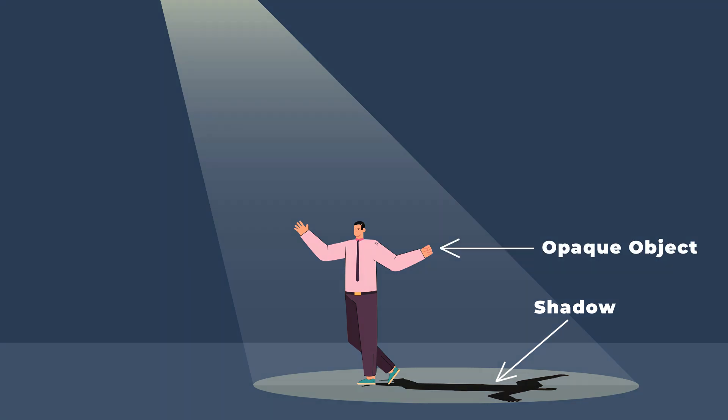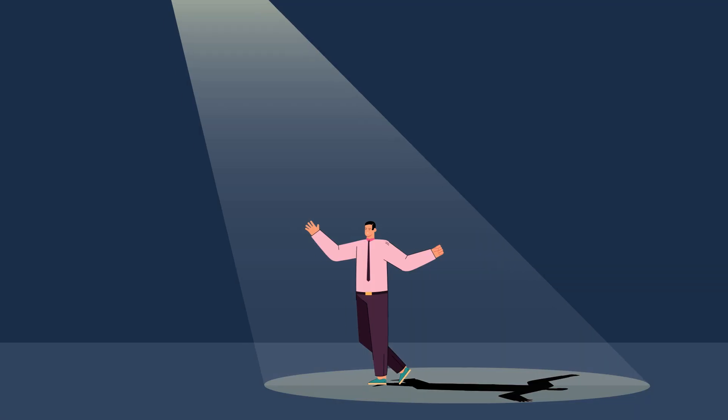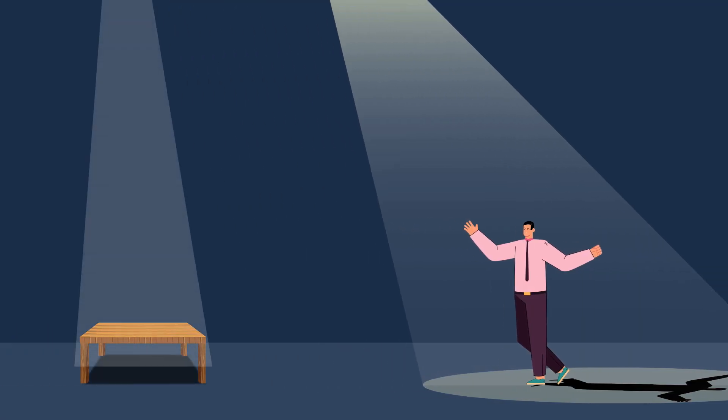When light from a source, such as the sun or a flashlight, encounters an object, it cannot pass through, creating a shadow behind it.